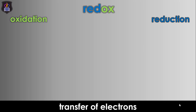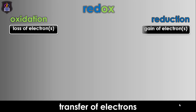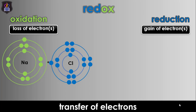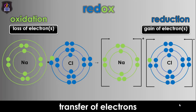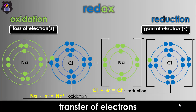Next, let's look at redox reactions in terms of electron transfer. Oxidation is the loss of electrons by a substance, while reduction is the gain of electrons by a substance in a redox reaction. Consider the electrovalent combination between a sodium atom and a chlorine atom to form sodium chloride. The sodium atom loses its valence electron and gets oxidized to sodium ion, as shown on the screen, while the chlorine atom gains the electron lost by sodium and becomes reduced to chloride ion.